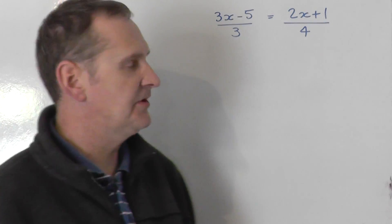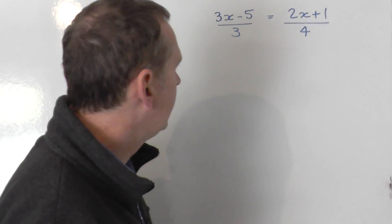Okay, I'm going to solve 3x minus 5 all divided by 3 equals 2x plus 1 all divided by 4.